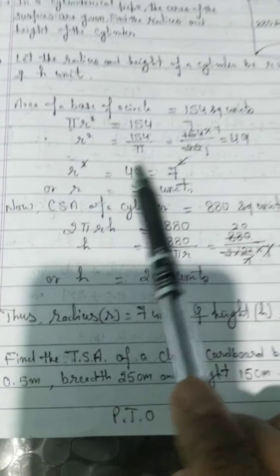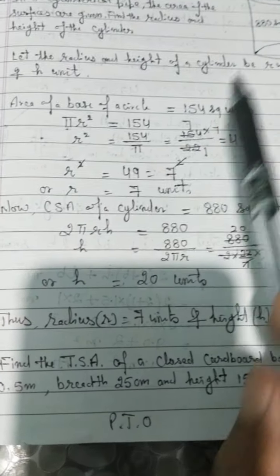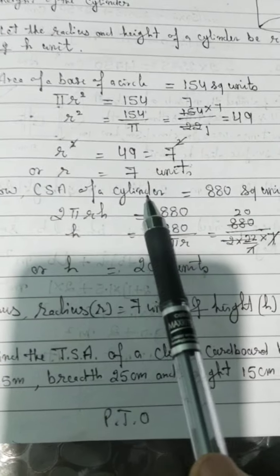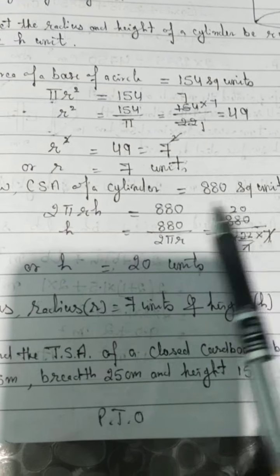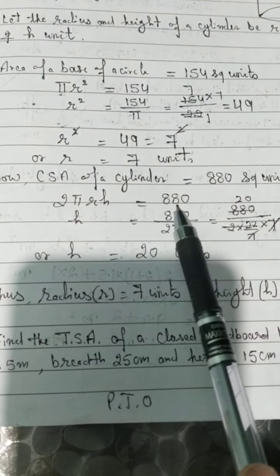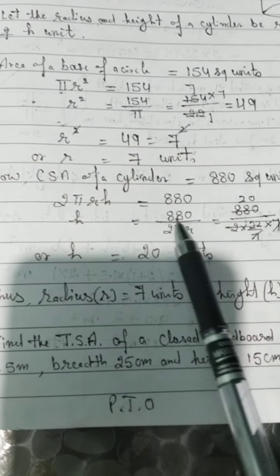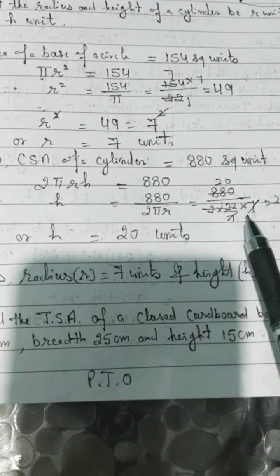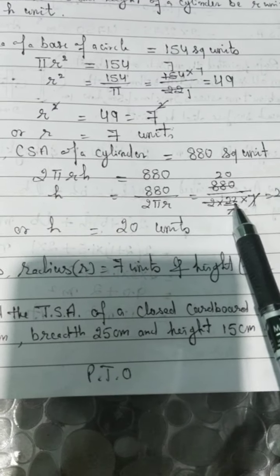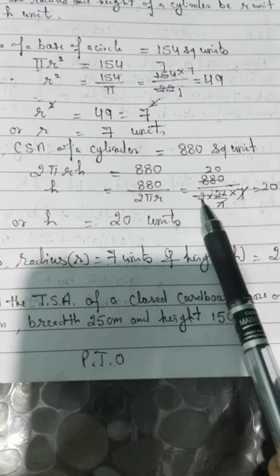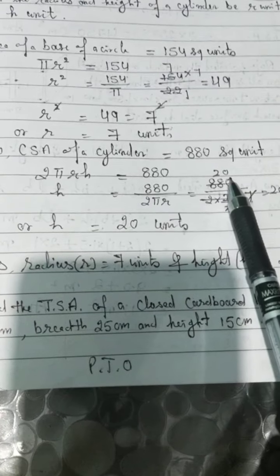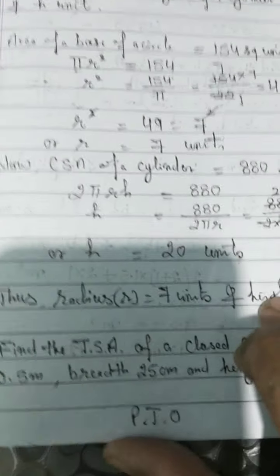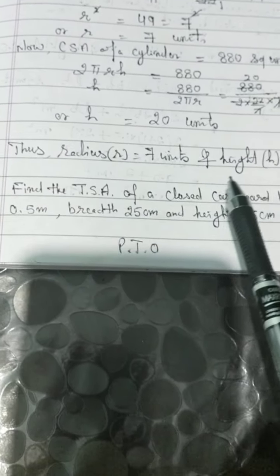Now substituting this value of radius into the curved surface area of the cylinder — curved surface area is given as 880 square units. So 2 pi r h = 880, therefore h = 880 upon (2 × 22/7 × 7) = 880 upon 44 = 20 units. Thus radius = 7 units and height = 20 units.